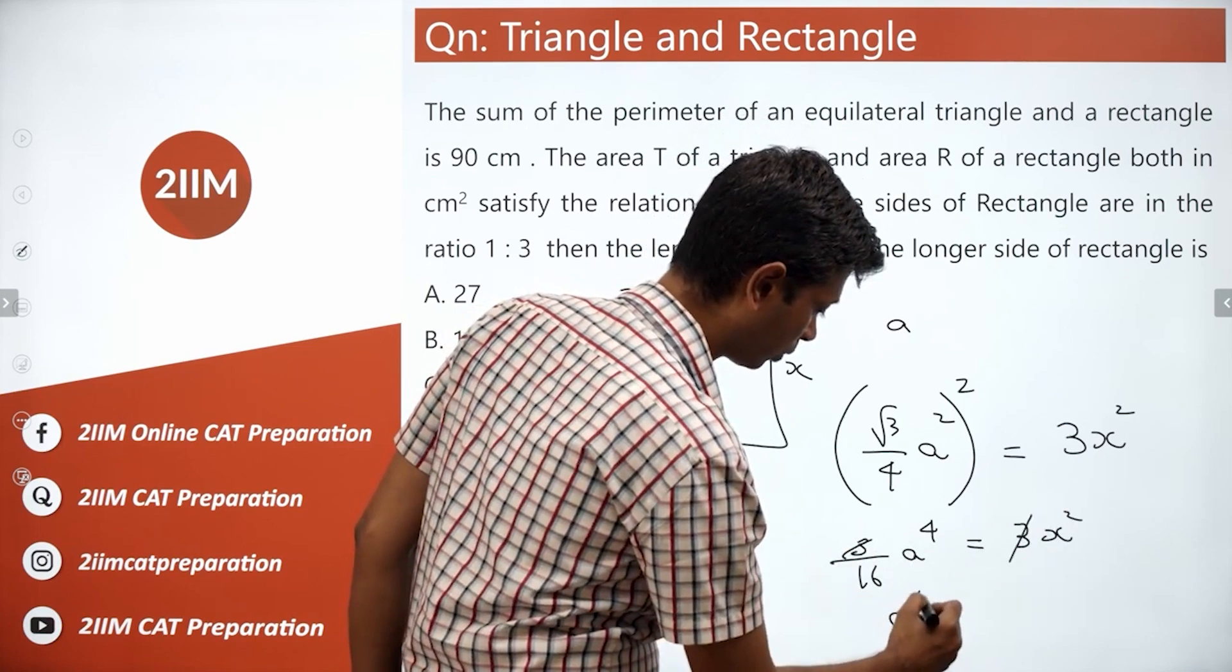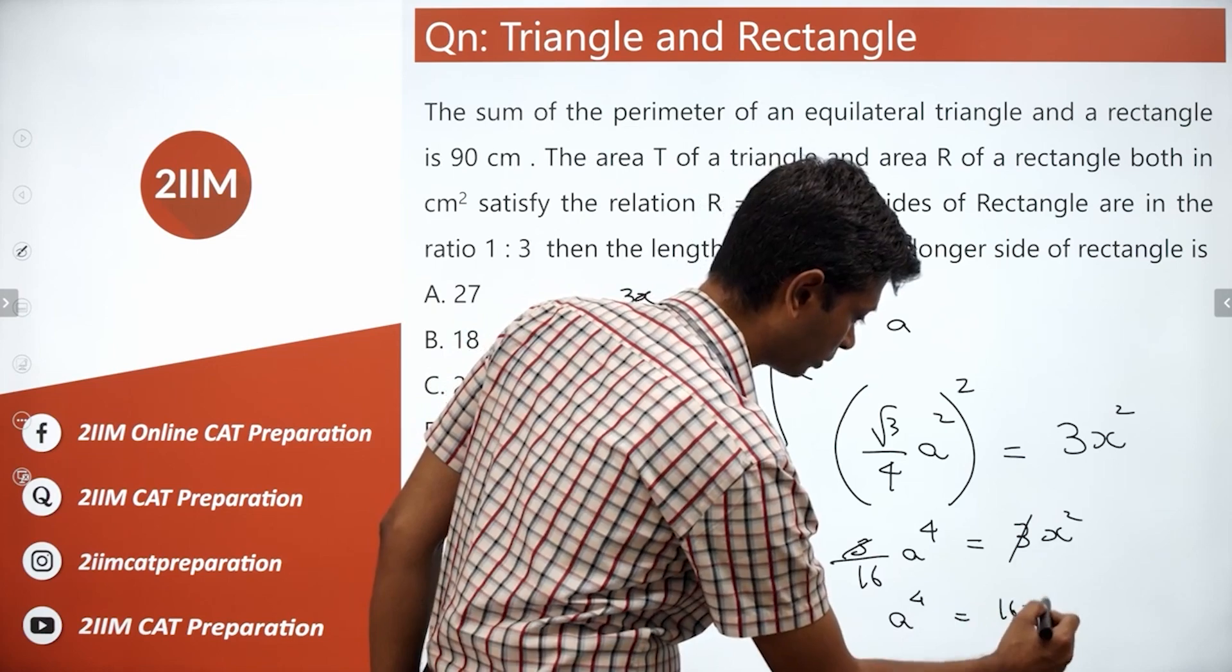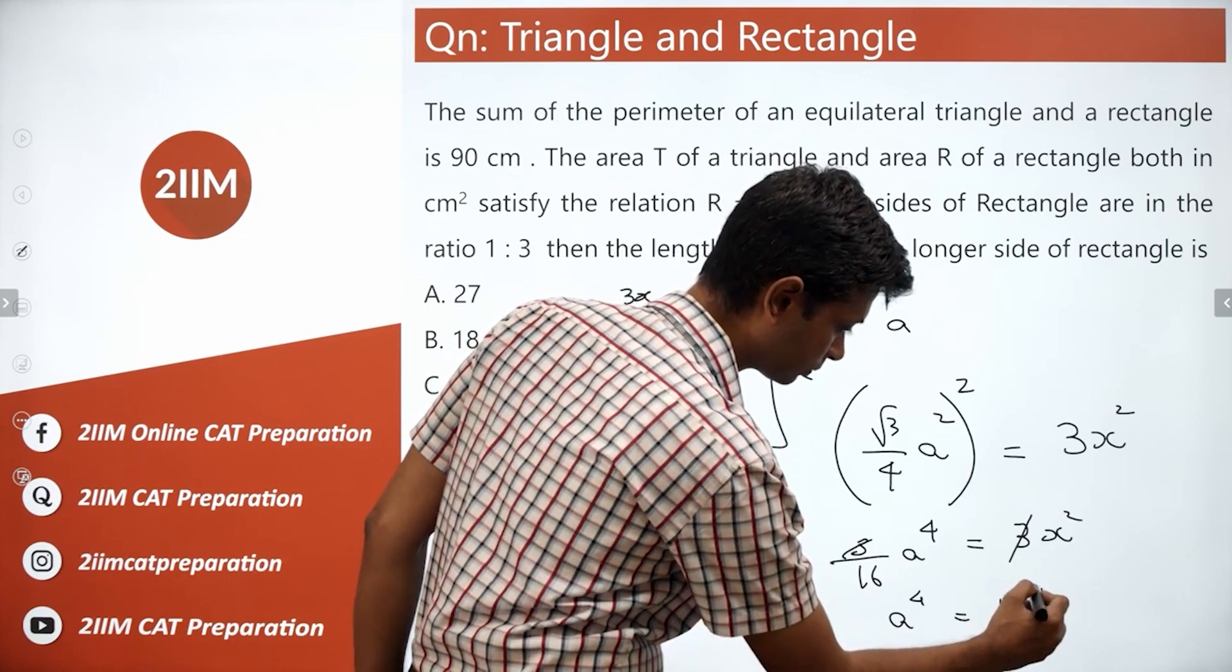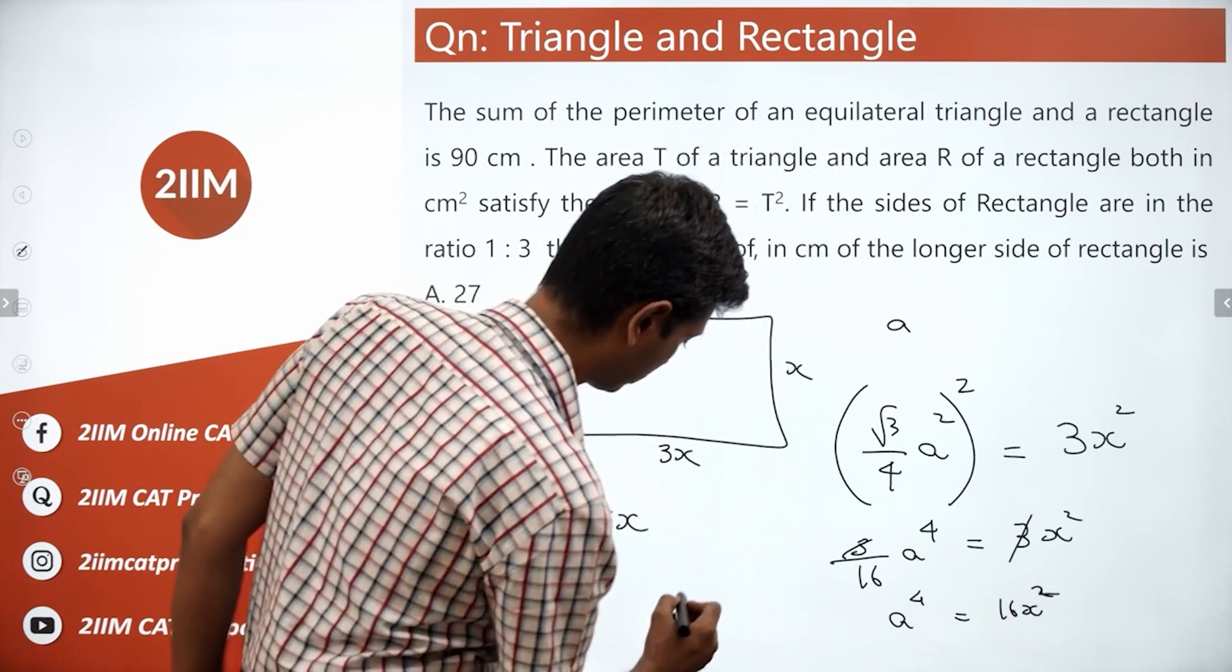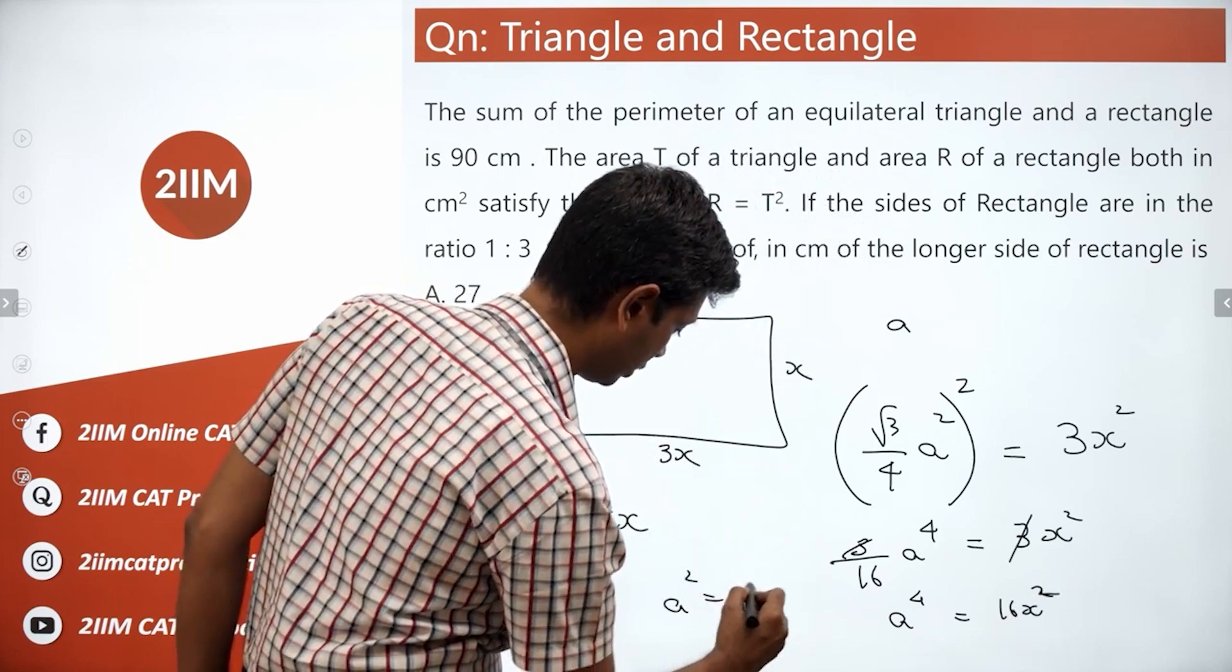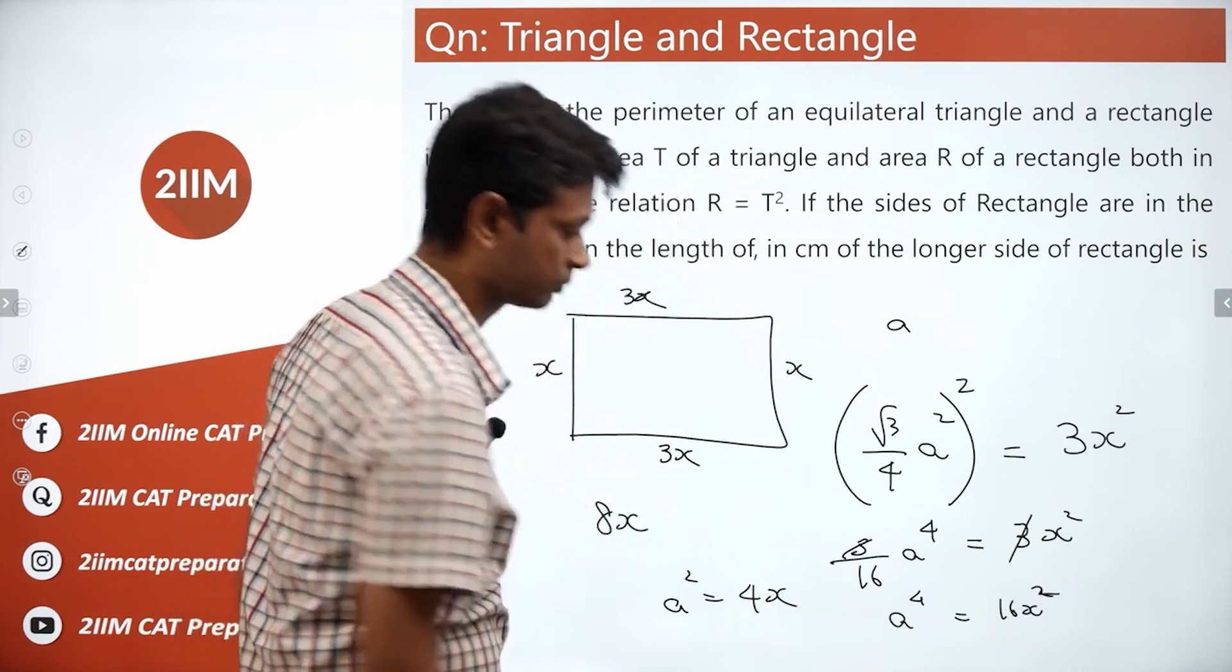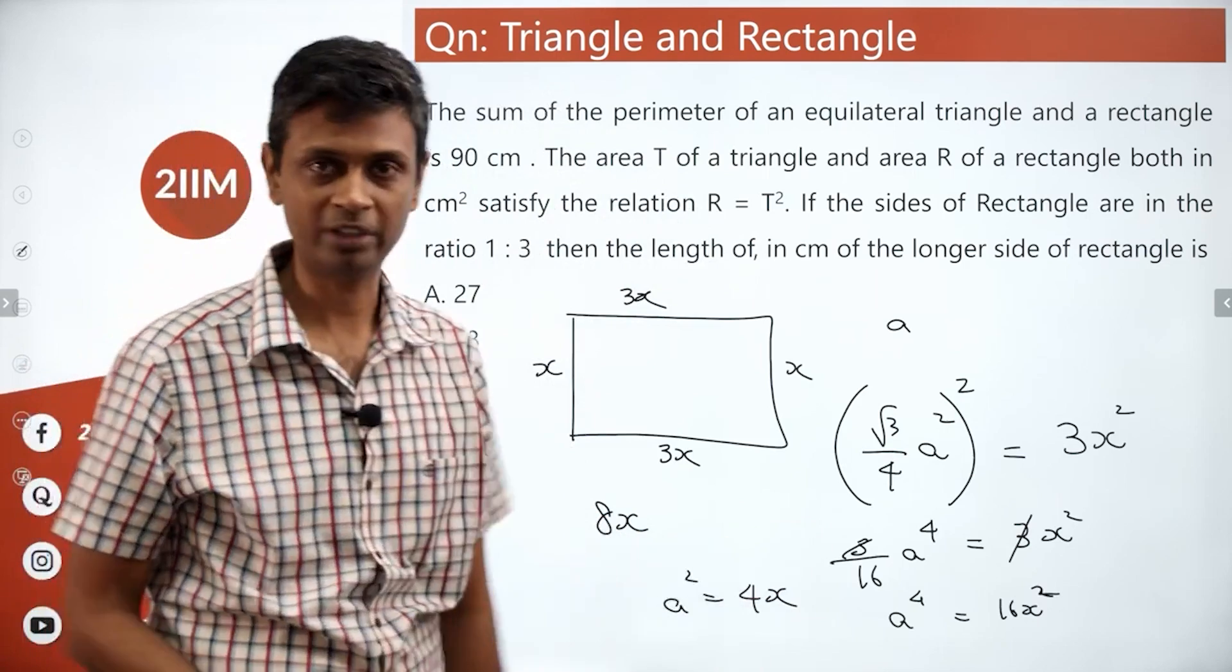A power 4 is 16x square or A square equals 4x. Lovely. A square equals 4 times x.